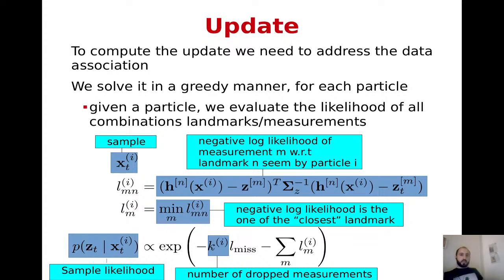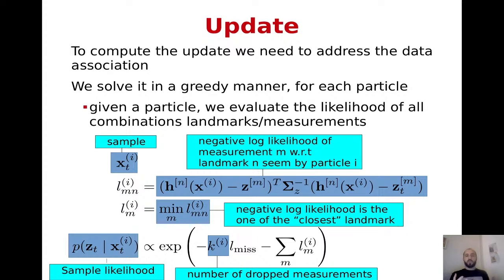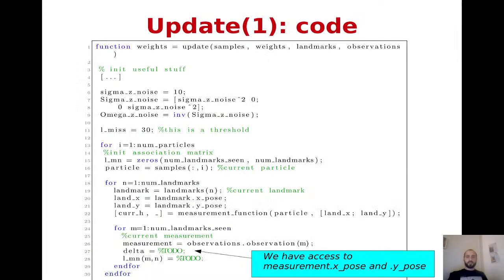By combining data association and likelihood evaluation, we speed up computation per particle. However, constructing the matrix and evaluating the minimum over rows for each particle makes everything very slow. A much more efficient way would be to use the nearest-neighbors approach explained in a prior lecture, but for now we stick with this greedy approach.